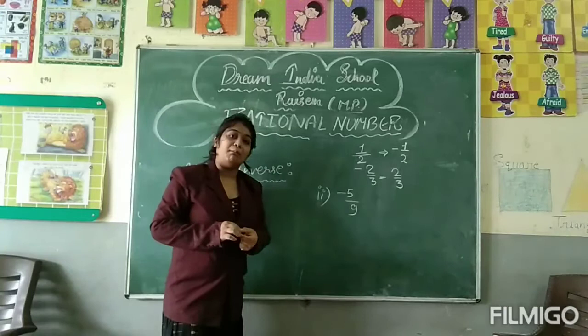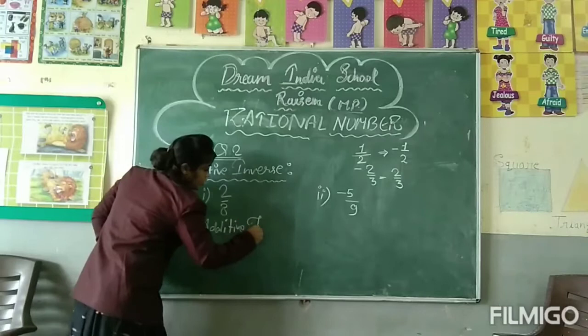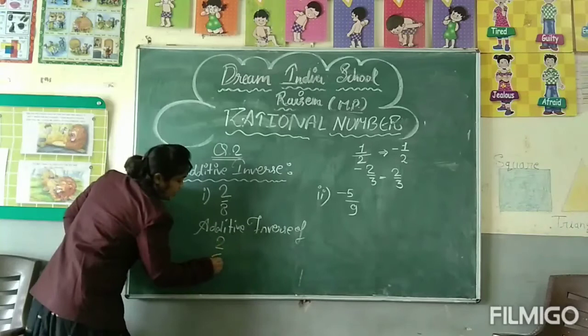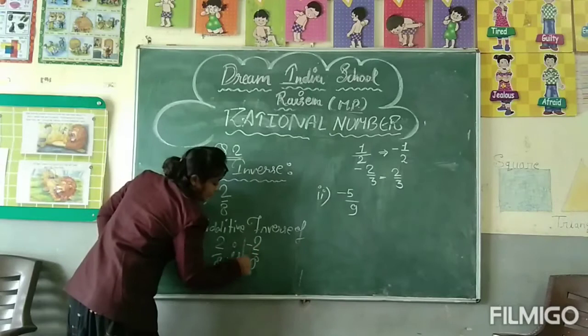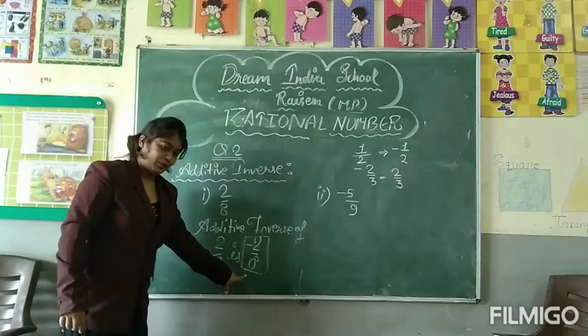Take 2 upon 8. Additive inverse of 2 upon 8 is minus 2 upon 8. Is it clear? Because this is in the form of positive, the additive inverse of this number is minus 2 upon 8. This is the result.